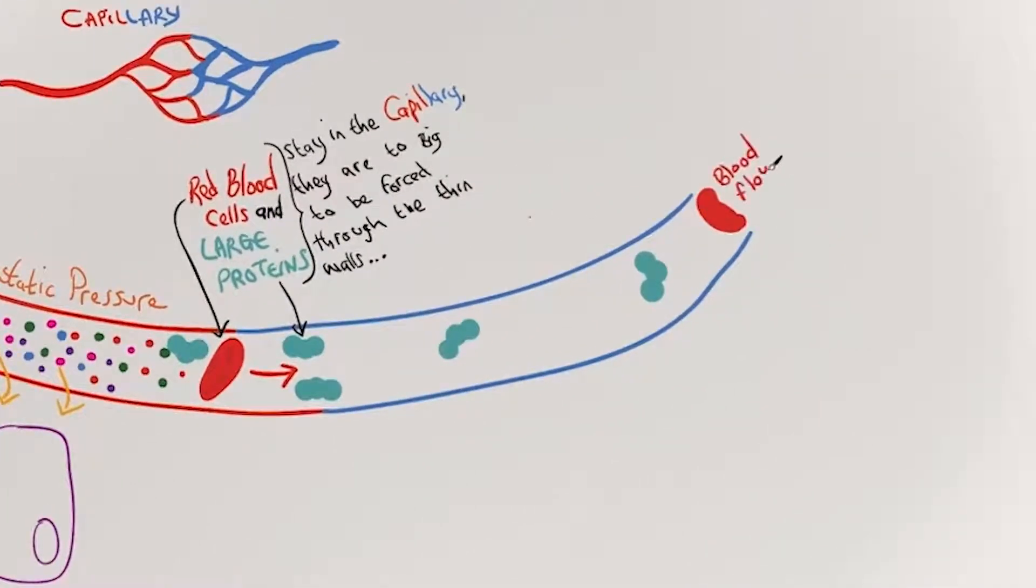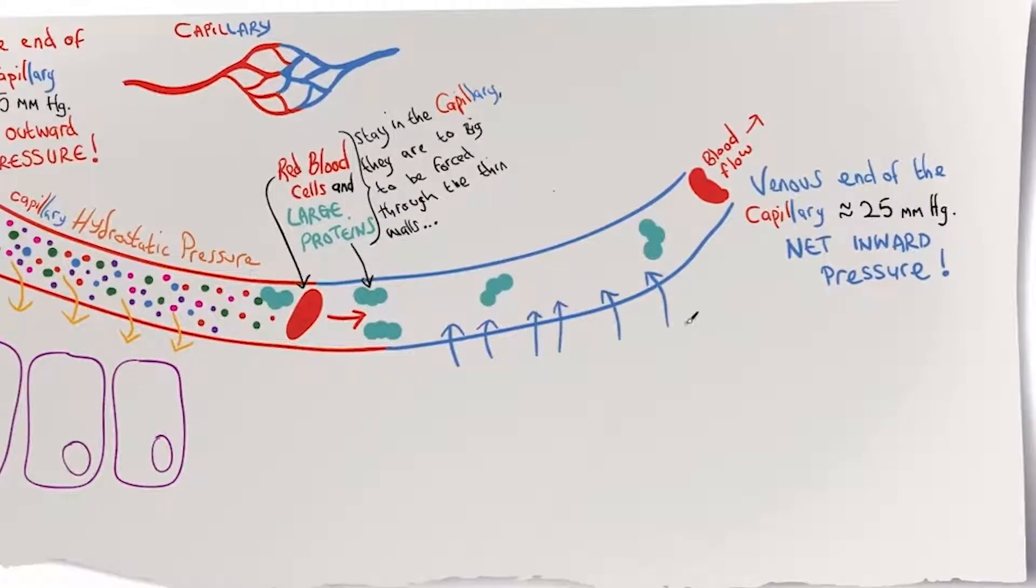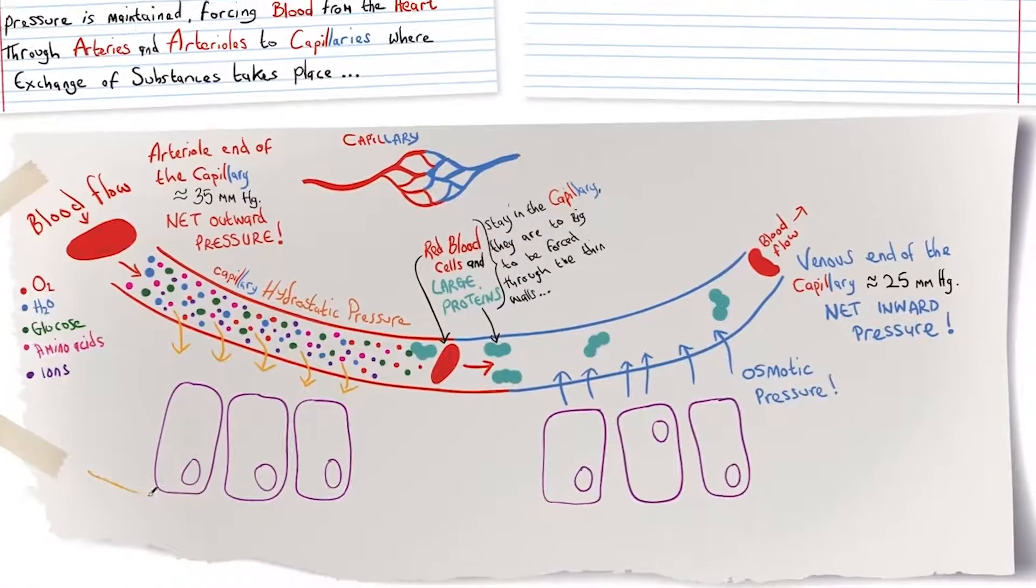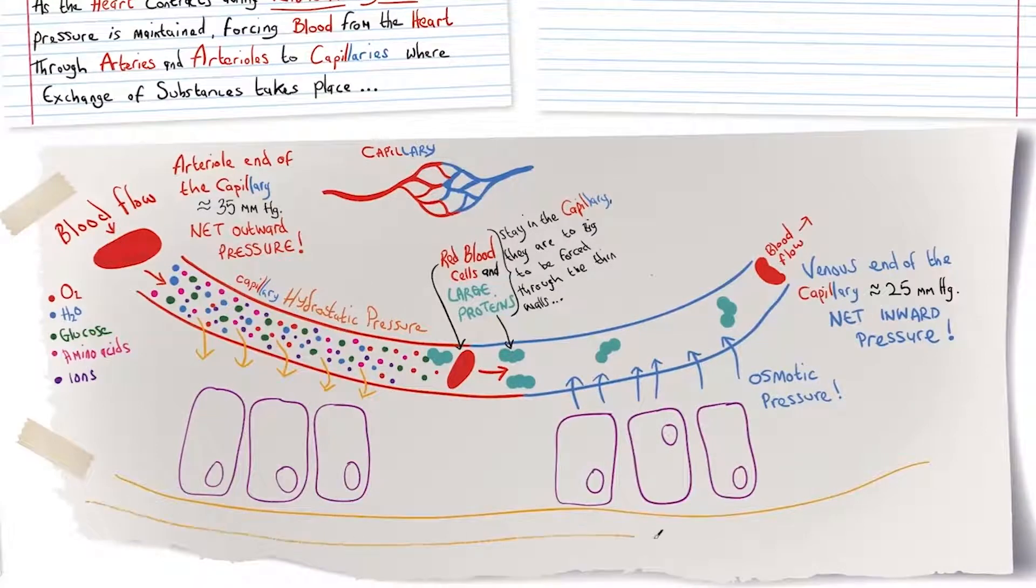So blood flow continues through the venous end of the capillary which has a lower pressure of approximately 25 milligrams of mercury so now there is a net inward pressure. This is due to osmotic pressure. The remaining proteins in the capillary have lowered the water potential and therefore water and some waste products will be reabsorbed.